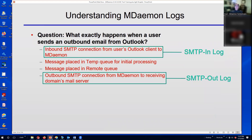When a user sends an outbound email from Outlook, that inbound SMTP connection is shown in the SMTP in log. The message is placed into a temporary queue for initial processing before it goes into the remote queue, where it can be sent outbound to the external recipient. That outbound connection activity is written to the SMTP out log.